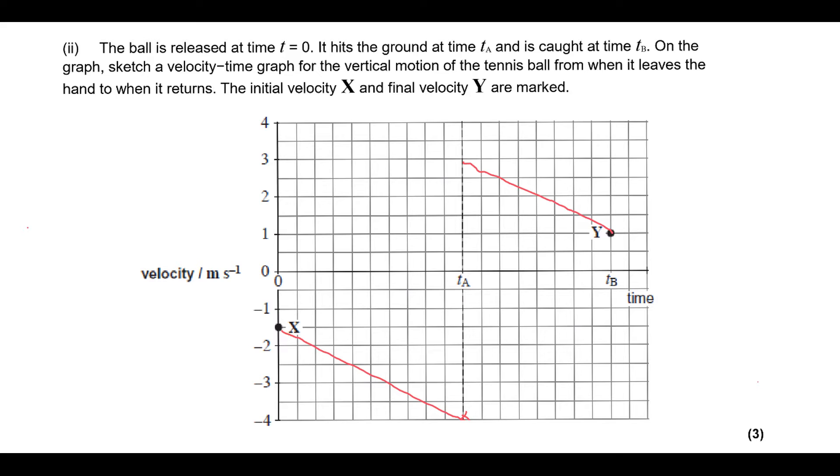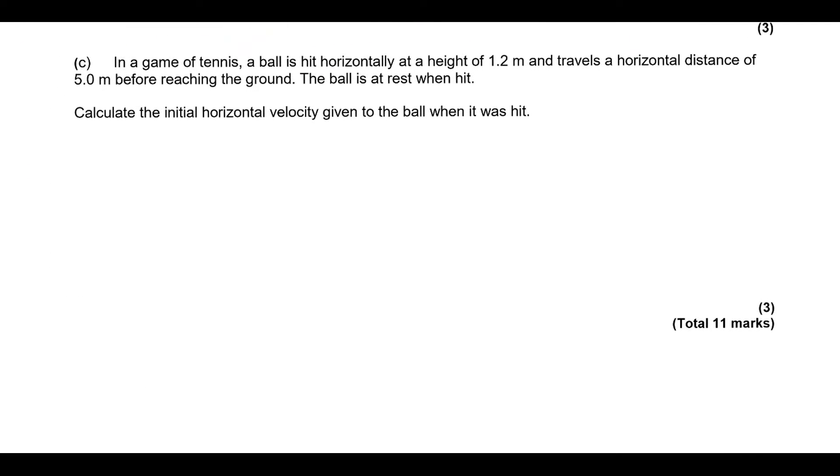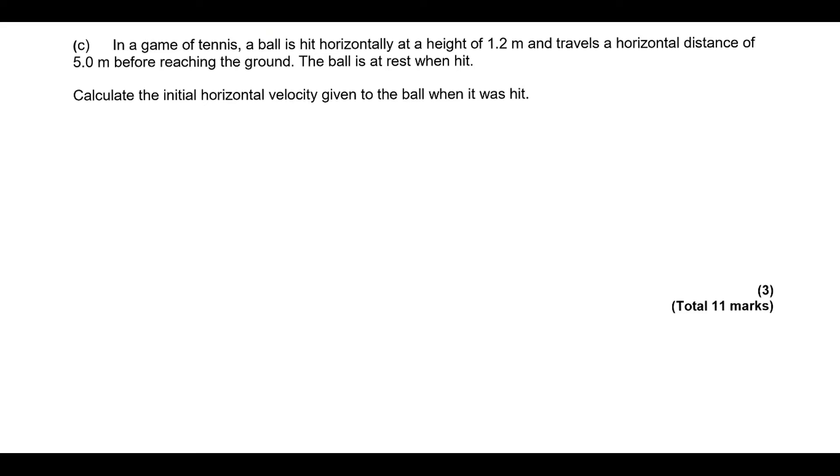So let's move on. Okay, so in a game of tennis, a ball is hit horizontally at a height of 1.2 metres and travels a horizontal distance of 5.0 metres before reaching the ground. Calculate the initial horizontal velocity given to the ball when it was hit. Okay, so the first key here is we've got a distance, but to get velocities we're going to need time. So what we're going to do is calculate the time it takes to fall 1.2 metres. So what we're going to do is use this equation right here.